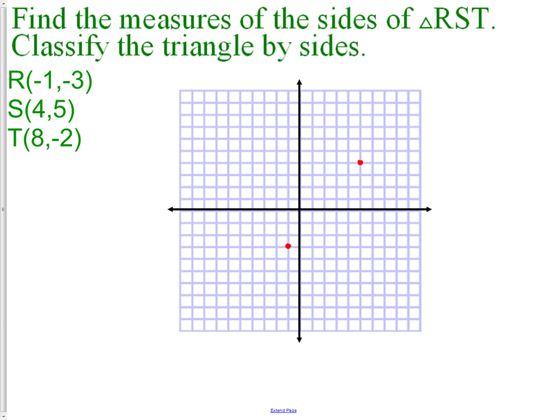And we have point T, which is at (8, 2). We have our three points. They are not collinear points, which means we can make a triangle out of them. If I connect R to S, S to T, and T back to R, we have a triangle.